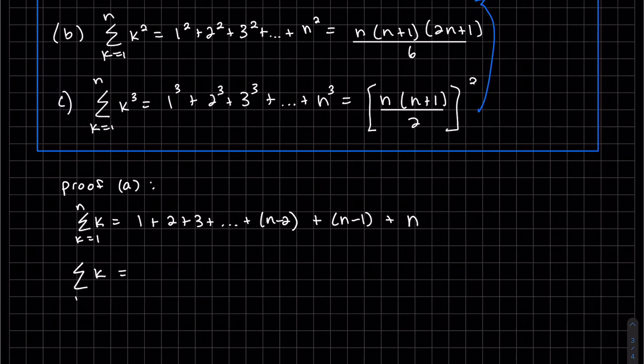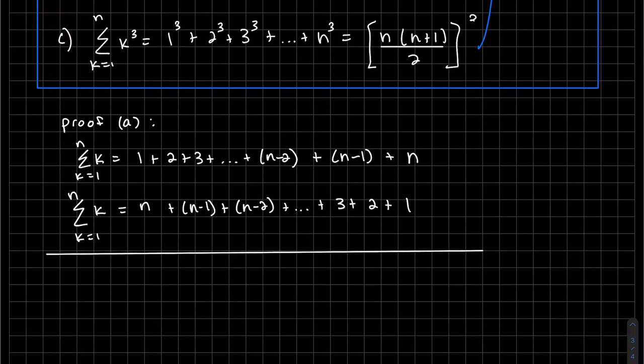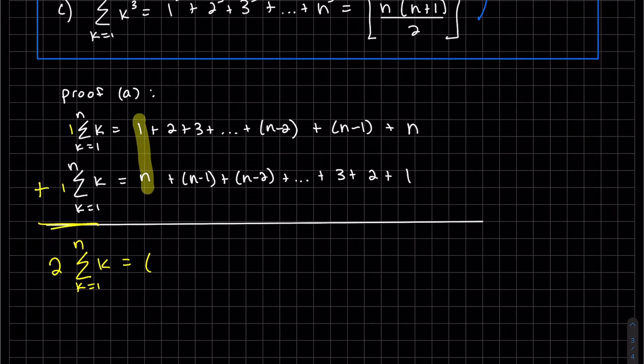And I'm going to also write the same thing. I'm just kind of copy this, but I'm going to write it backwards. So n first. So we're basically going to add the two lines together. So when we add on the left side, we get two of these. You get basically one of them plus one of them is two of them. You get one plus n. And actually I'm going to write it as n plus one. Same thing.